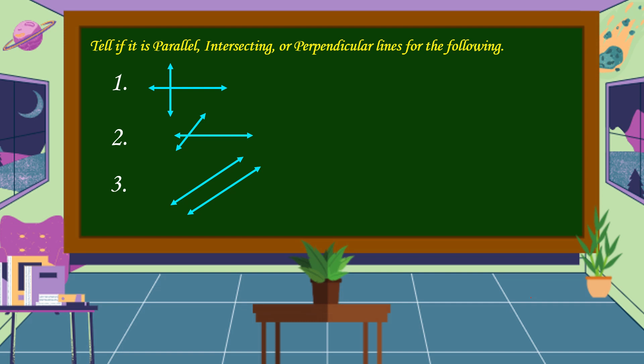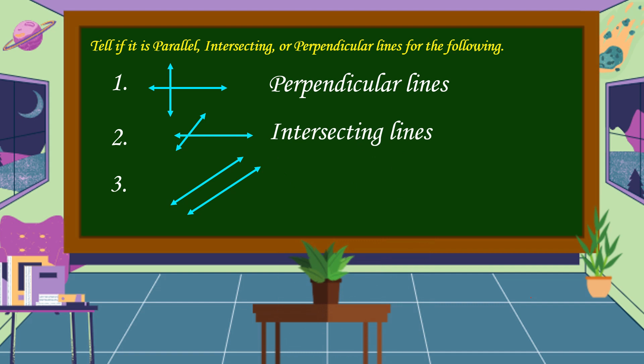Okay, let's check your work. What is your answer for number one? You're right — this line pair is perpendicular lines. How about number two? Yes, this line pair is intersecting lines. What is your answer for number three? You're right — this line pair is parallel lines.